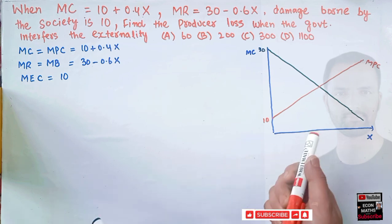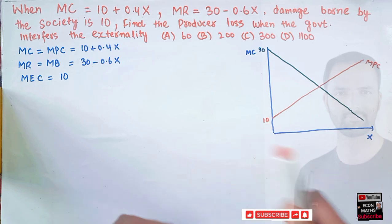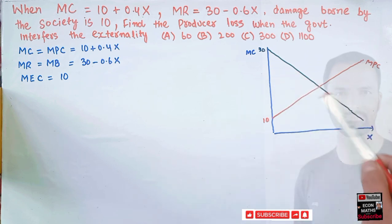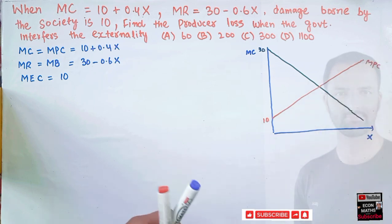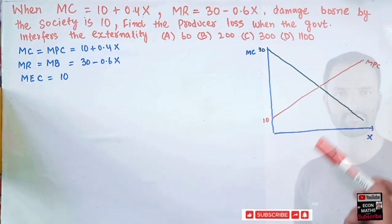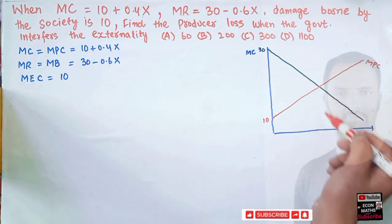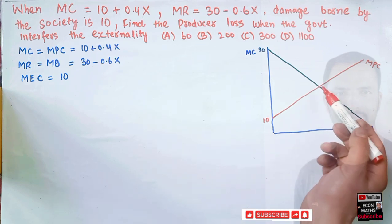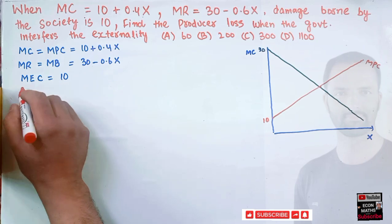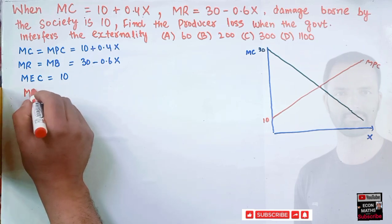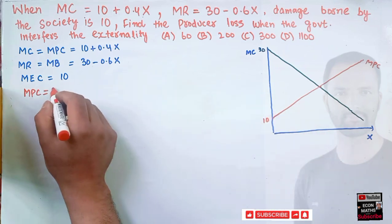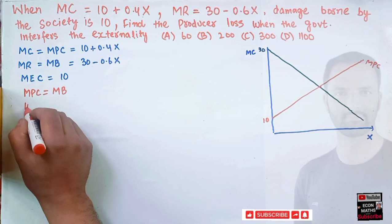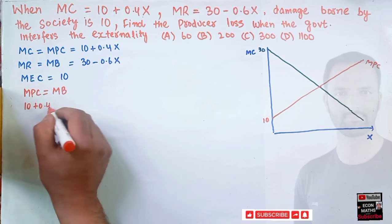The initial equilibrium level of output and price is determined by the intersection of the demand curve and the marginal private cost curve (the supply curve). When we don't have the marginal external cost, the optimal output is decided by setting marginal private cost equal to marginal benefit.